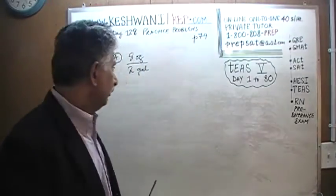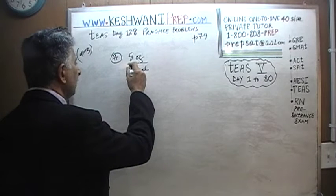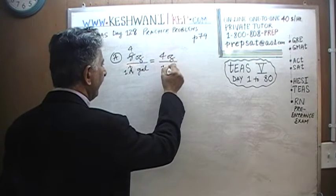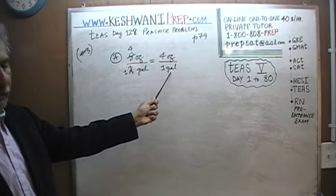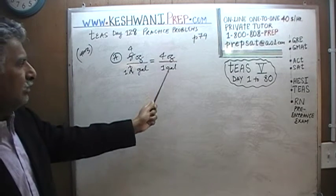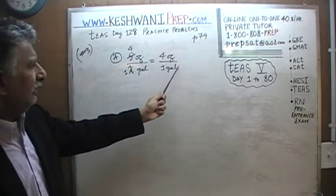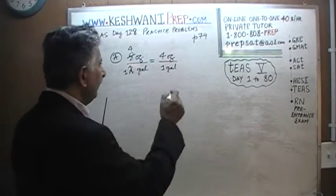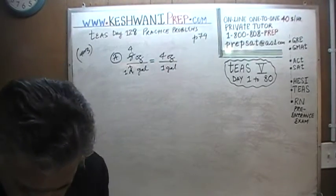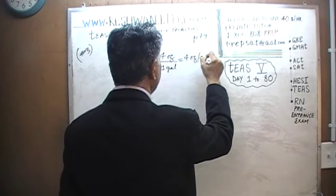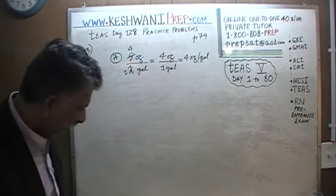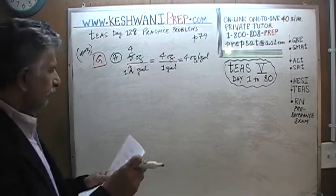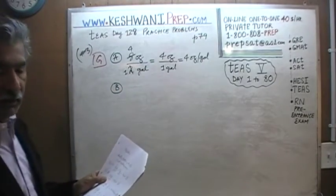How can we do that? We see eight on the top and two at the bottom. Let's divide top and bottom by two. Two is going to become one and eight is going to become four, so this reduces to four ounces per one gallon — that is a unit rate. We have converted the rate into a unit rate. Now go through all the answer choices and find the one that expresses four ounces per one gallon, and that is answer choice G.